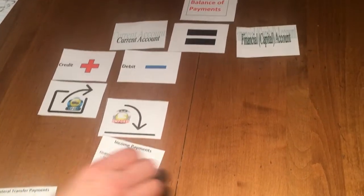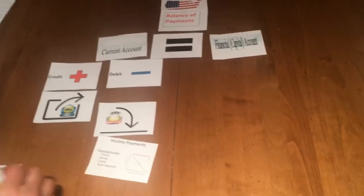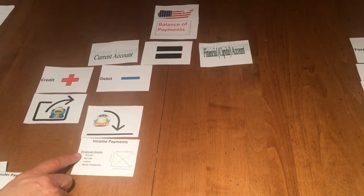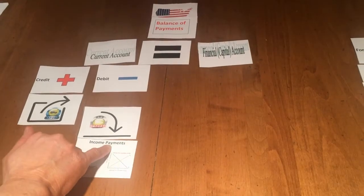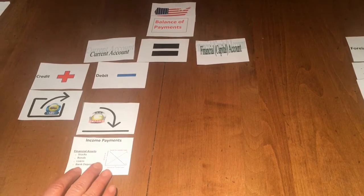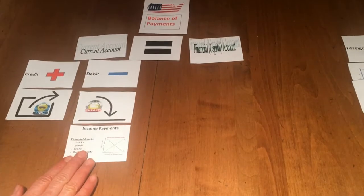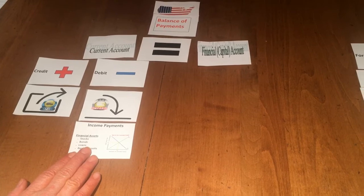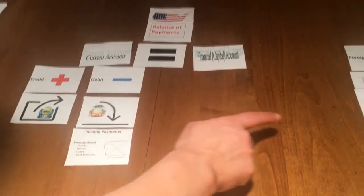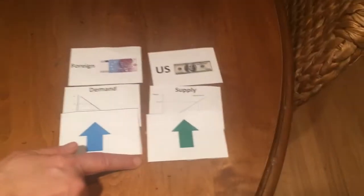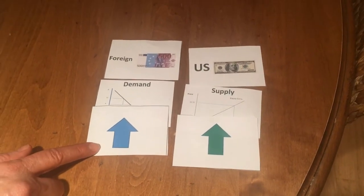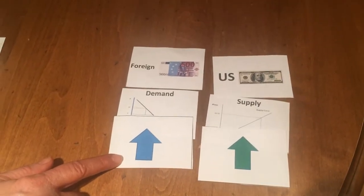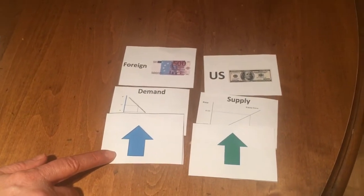Another component of the current account is income payments. Income payments are payments for financial assets like stocks, bonds, loans, and bank deposits. The keyword there is payments, and so therefore it's a debit because we are purchasing these financial assets in another country. That means we have to supply US dollars in order to obtain the foreign currency to buy the different types of financial assets.